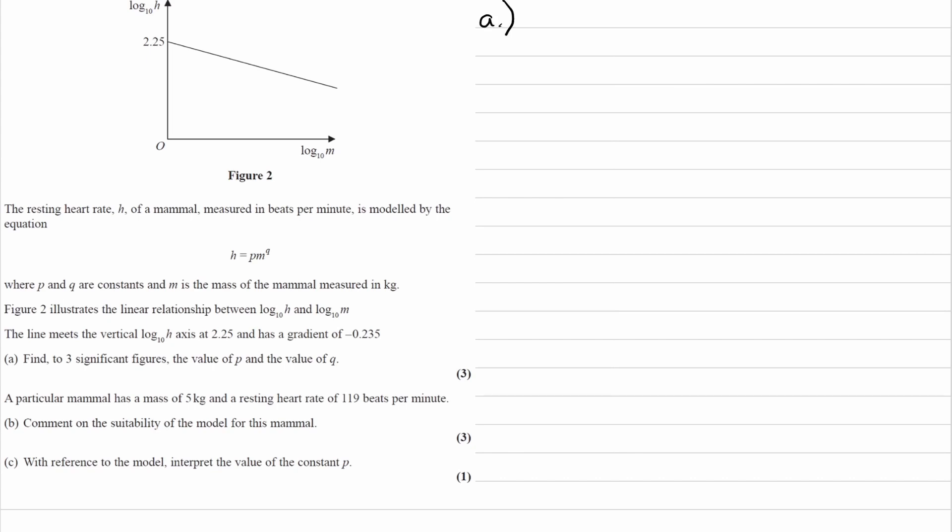So for part A, let's just run through some of the key information from the question. We're given a graph, and the quantity on the y-axis is log to the base 10 of h, and the corresponding value on the x-axis is log to the base 10 of m. And we're told that h is the resting heart rate of a mammal, and then we are told that the mass m is in kilograms.